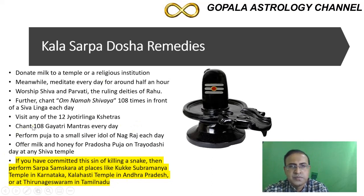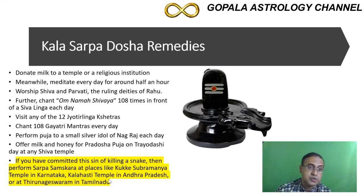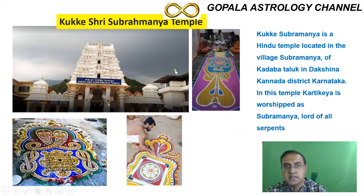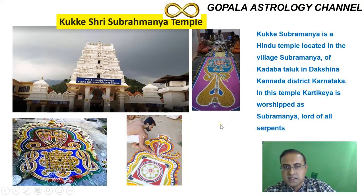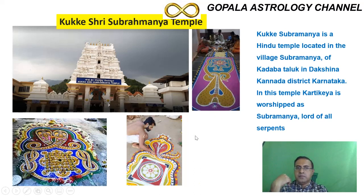I especially want to highlight the Kukke Subramanya Temple visit in Karnataka, India. This famous temple is in the southern part of India in the state of Karnataka, towards Mangalore on the west coast, in the Western Ghats — a very hilly and traditional area. It is mainly for getting rid of all 12 possible combinations of Kala Sarpa Dosha. The priests perform three main pujas or prayers: both Kala Sarpa Dosha and Sarpa Dosha can be relieved when you go to this temple.